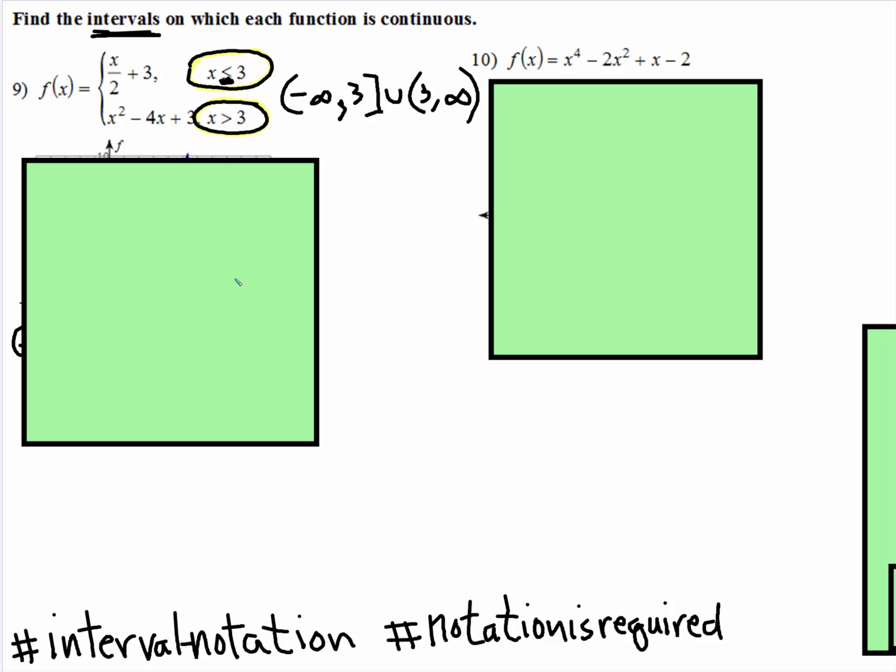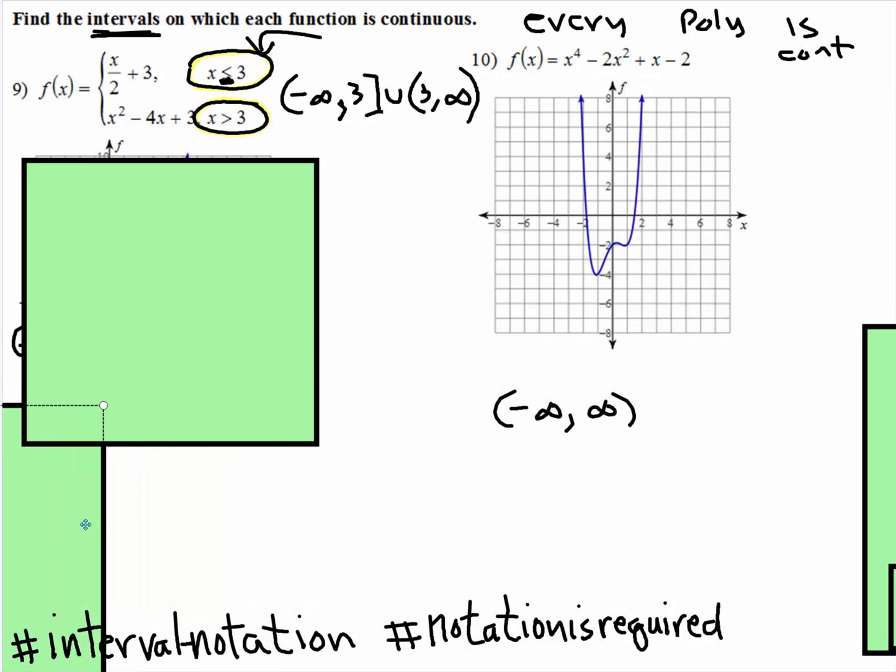Even if you didn't have a graph and this was on the exam, plug the 3 back into both of those. If those values don't equal each other, it is not continuous at that value on the x-axis. And just a reminder, every polynomial is continuous. So the domain on this would just be negative infinity to positive infinity.